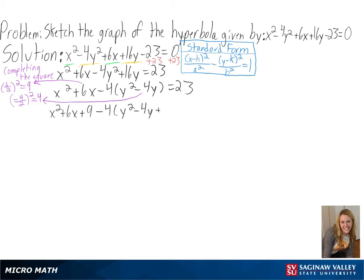Whatever we add to the left side, we must also add to the right side. So distributing our -4, we are adding 9 and -4 times 4 to our 23.